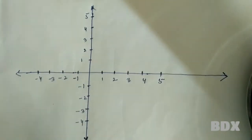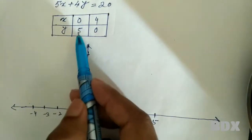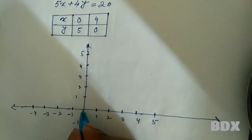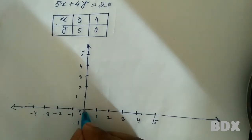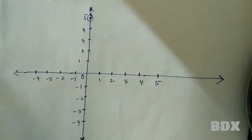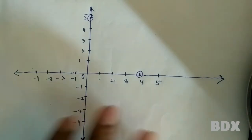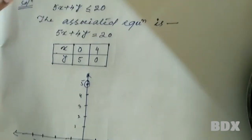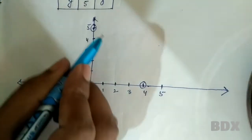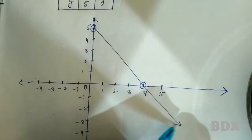Now put the coordinates of the solutions of the equation on the graph. The point (0, 5) is plotted here, and the point (4, 0) is plotted here. Since we have 5x plus 4y less than or equal to 20, the line passing through these two points is a straight solid line, not a dotted line.